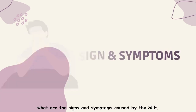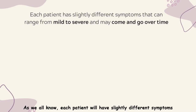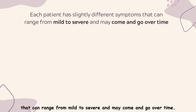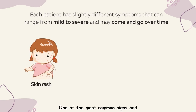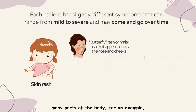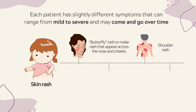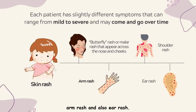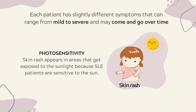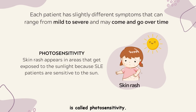Now let's see what are the signs and symptoms caused by SLE. Each patient will have slightly different symptoms that can range from mild to severe and may come and go over time. One of the most common signs and symptoms is skin rash, which can occur in many parts of the body — for example, the butterfly rash or malar rash that appears across the nose and cheeks, and also shoulder rash, arm rash, and ear rash. Skin rash can also appear in areas exposed to sunlight, because SLE patients are sensitive to the sun — this reaction is called photosensitivity.